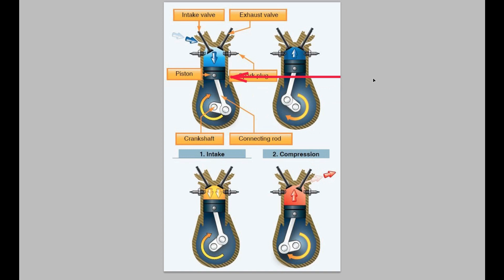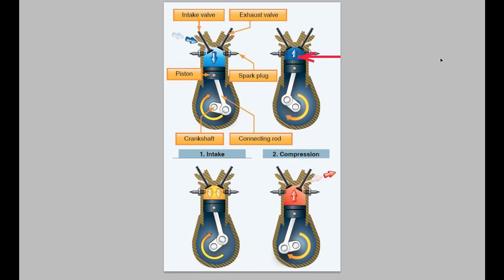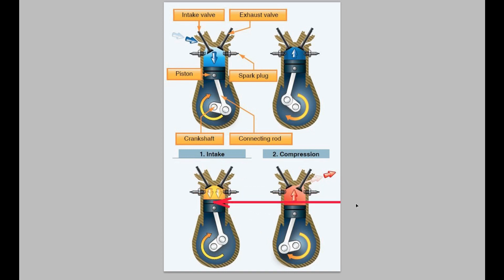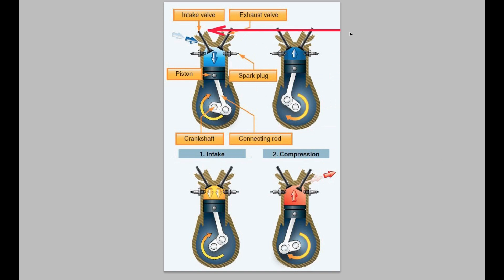The four cycles are intake, compression, power, and exhaust — they repeat over and over. The piston goes down, drawing the air-fuel mixture into the cylinder. The crankshaft turns, pushing the piston back up, compressing the mixture. At the right moment the valves close and the two spark plugs fire, causing an explosion that drives the piston back down. Then the exhaust valve opens, exhausting the gases, and the cycle starts again.